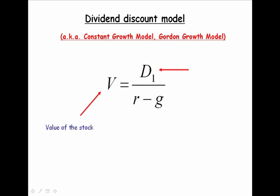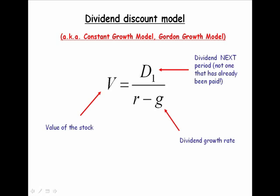In the numerator, we have D1. D is dividend — notice the subscript 1. That is the dividend next period, at period 1. It is not a dividend that has already been paid. In the denominator, we have G, which represents the growth rate of the dividends. To use this model, one has to use constant growth.